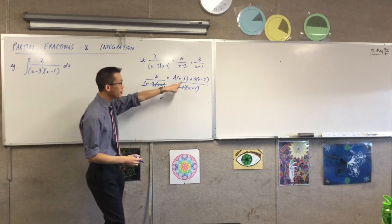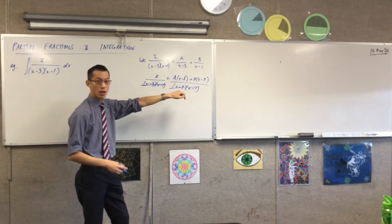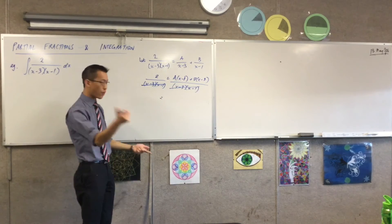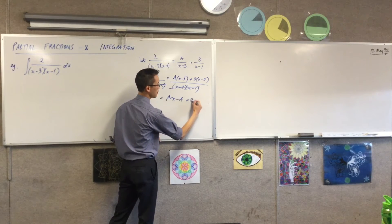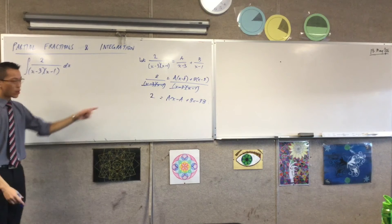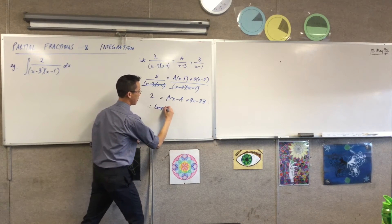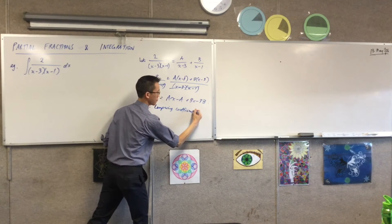I can either evaluate this at choice values of x, like leave it in its factorized form. And then, for instance, what values might I choose for x? Once I've canceled these, I could choose one, that'll leave me with this guy. And then I'll choose 3, which will leave me with this guy. Either of those will work.